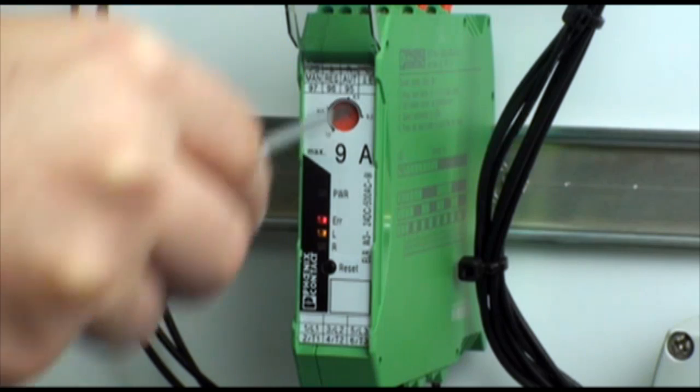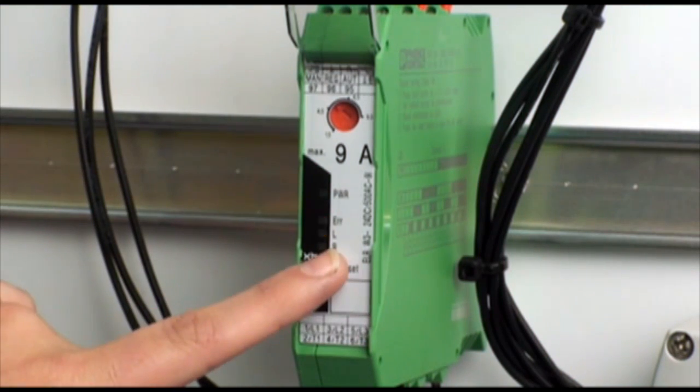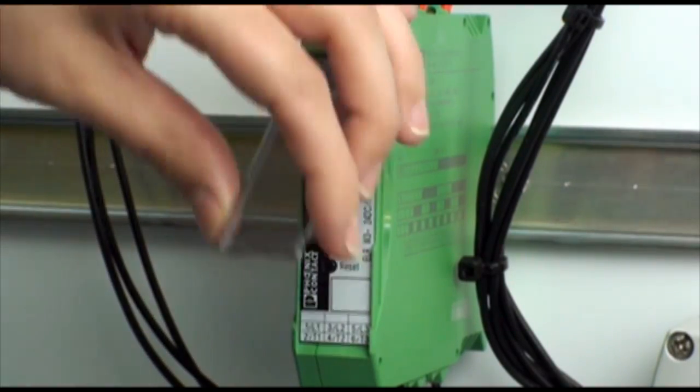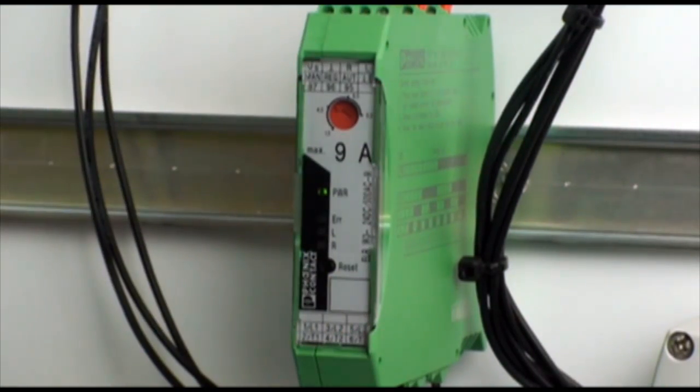Once you are satisfied with your new overload setting, push the reset button one more time to finalize the setting. The new setting is now in the non-volatile state of the 4-in-1.